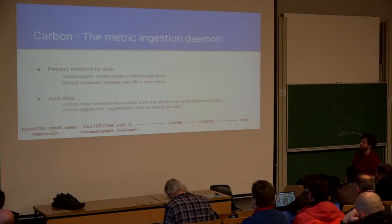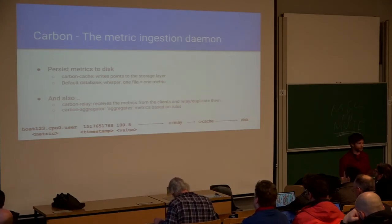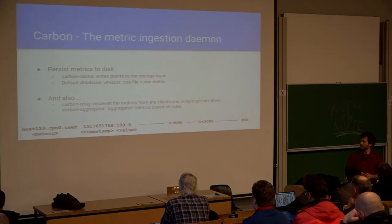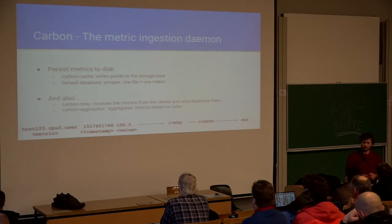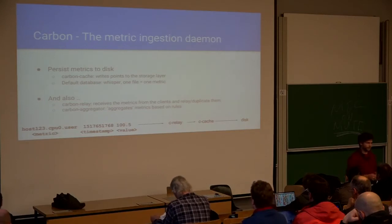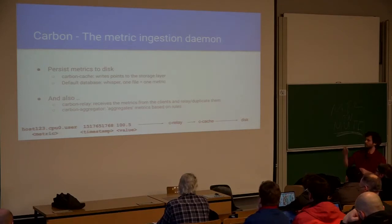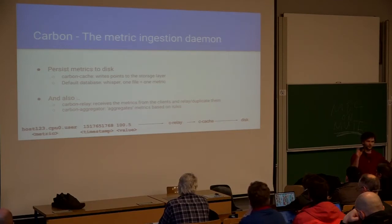A metric is the name, and each metric in Whisper is stored in one file. Periodically your host sends something like one metric per item — one for CPU, one for memory, and everything else. Carbon will receive them over TCP, UDP, or other protocols, and write them to separate files. You also have Carbon relay and Carbon aggregator used to do other things before Carbon cache. You can use those to, for example, duplicate the stream of metrics to different clusters, or use the aggregator to do a sum over one minute.